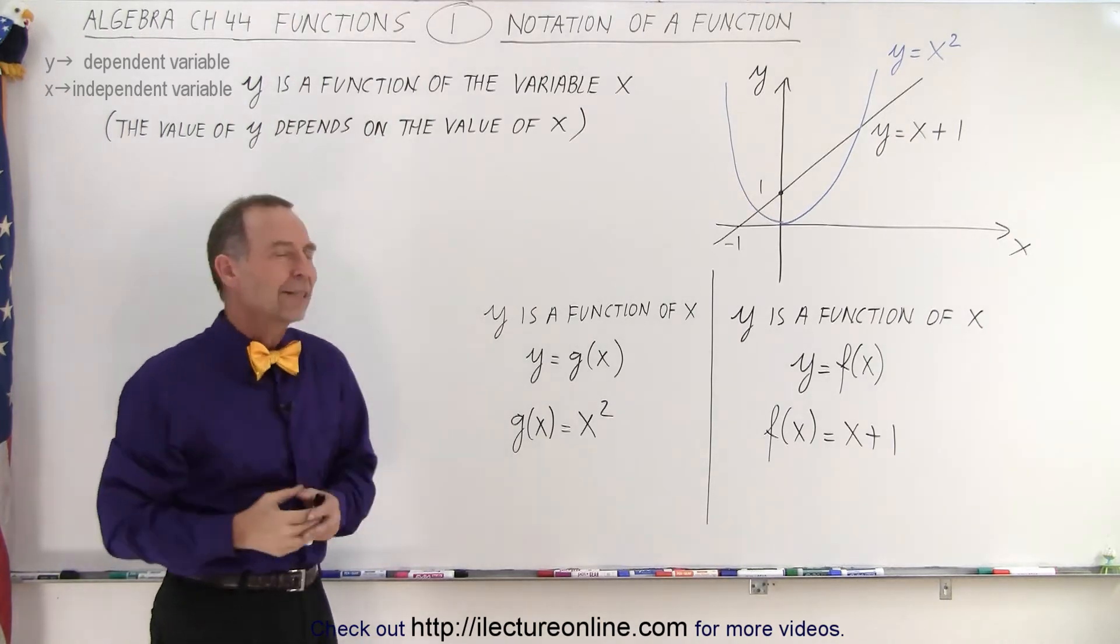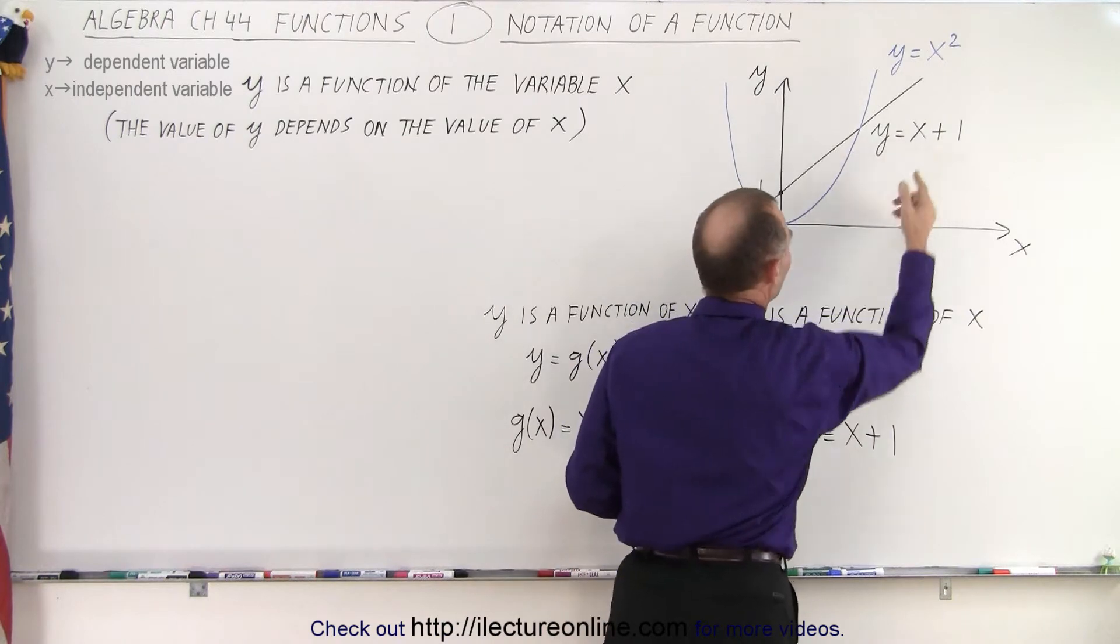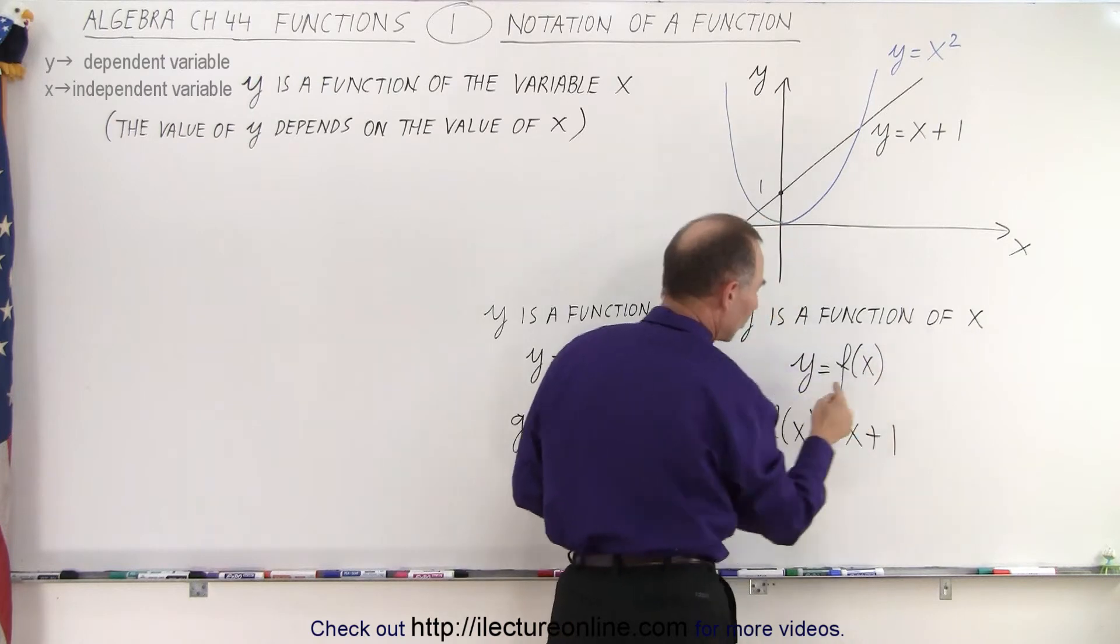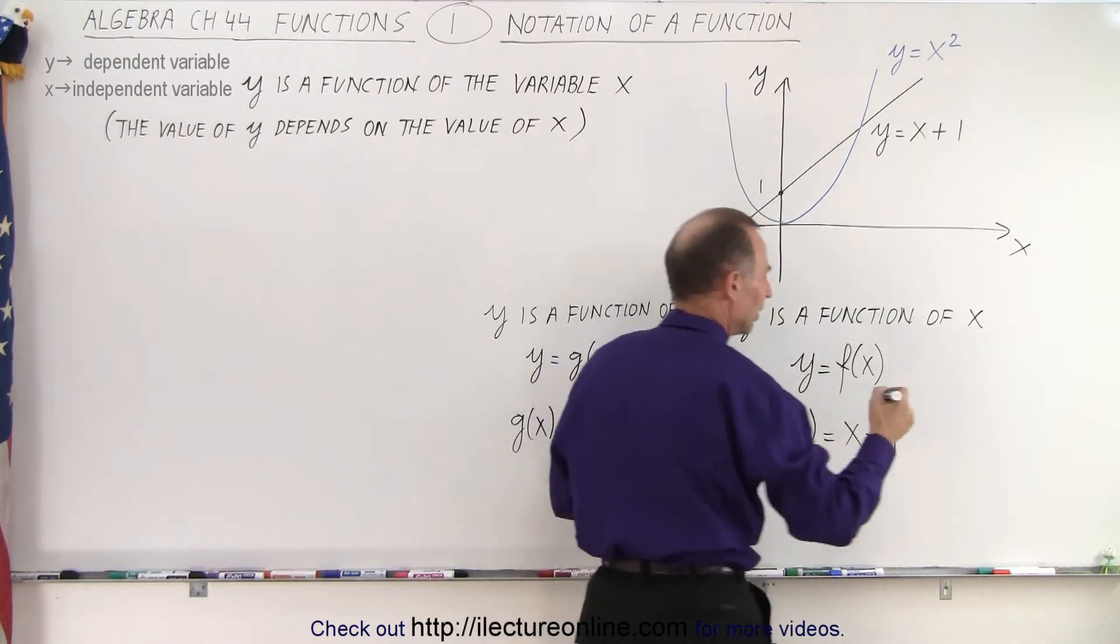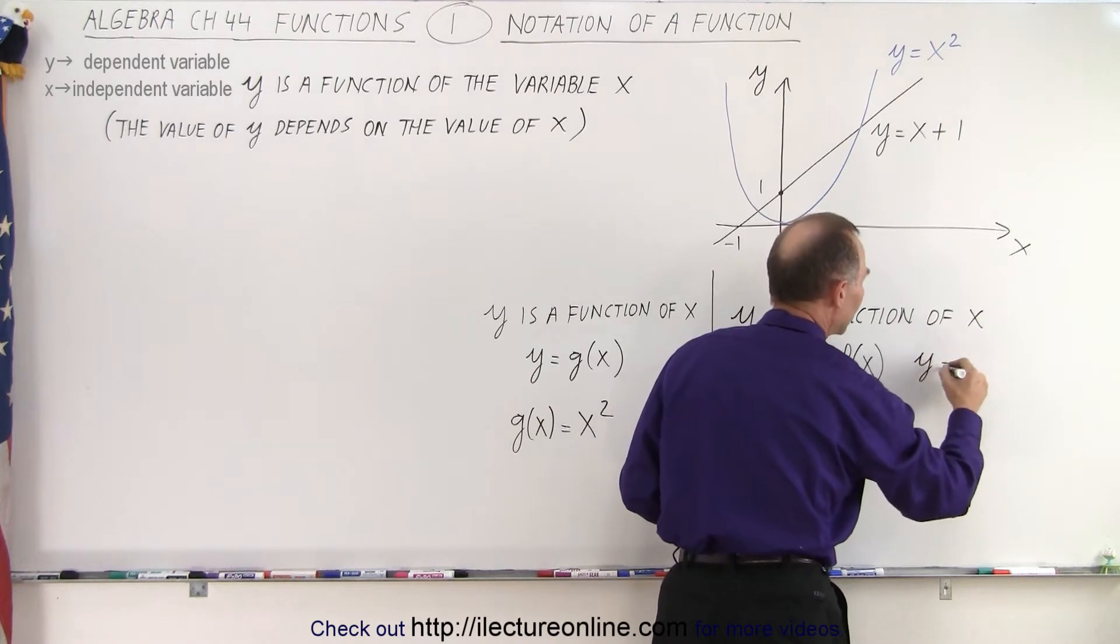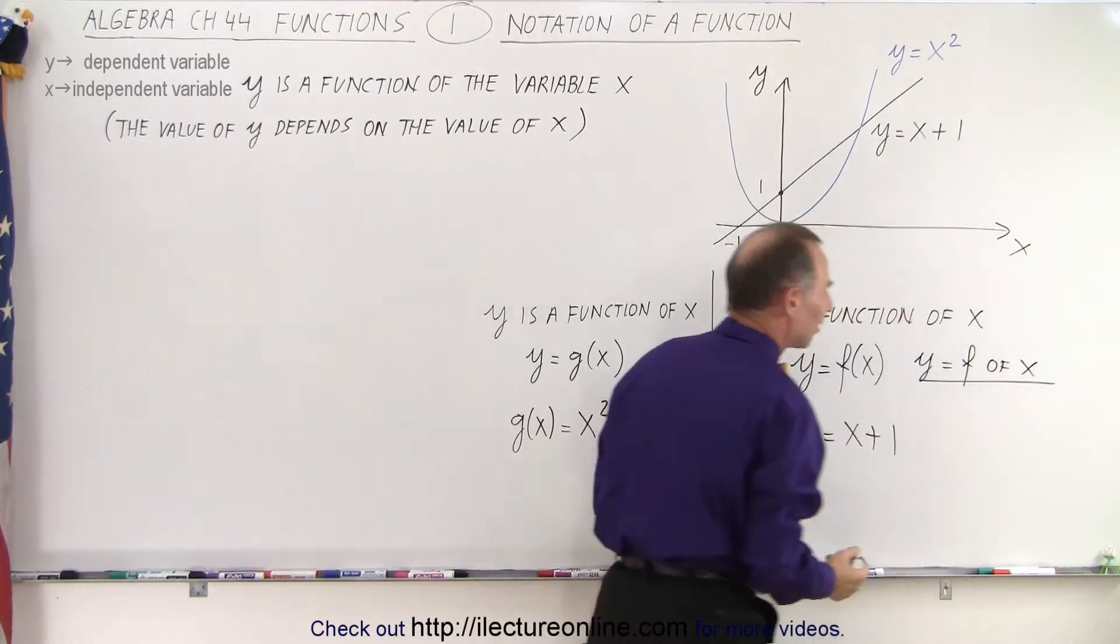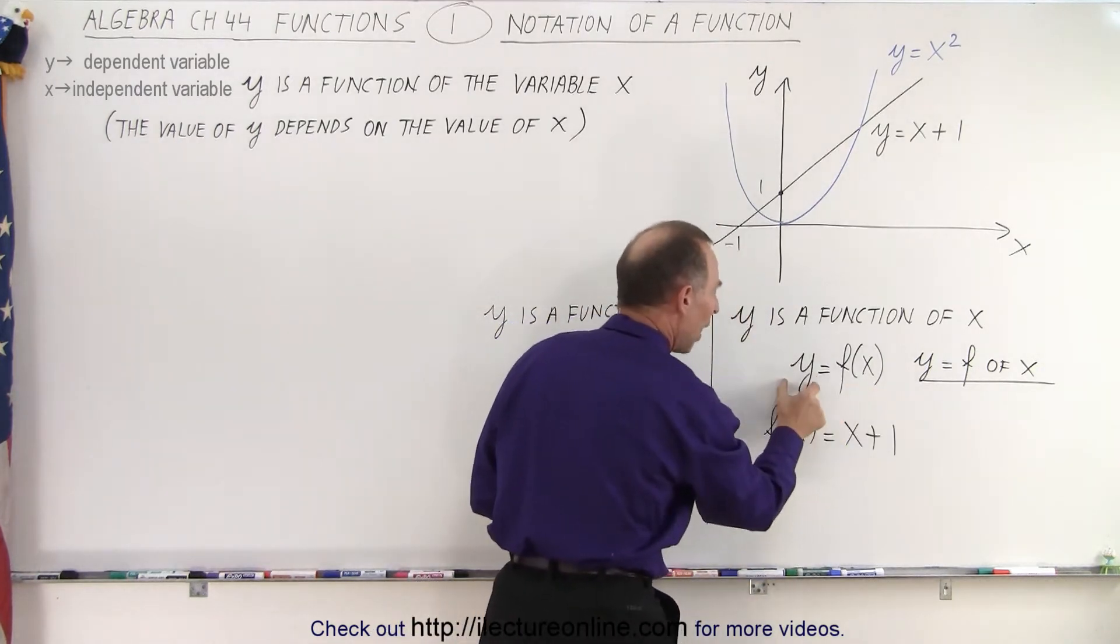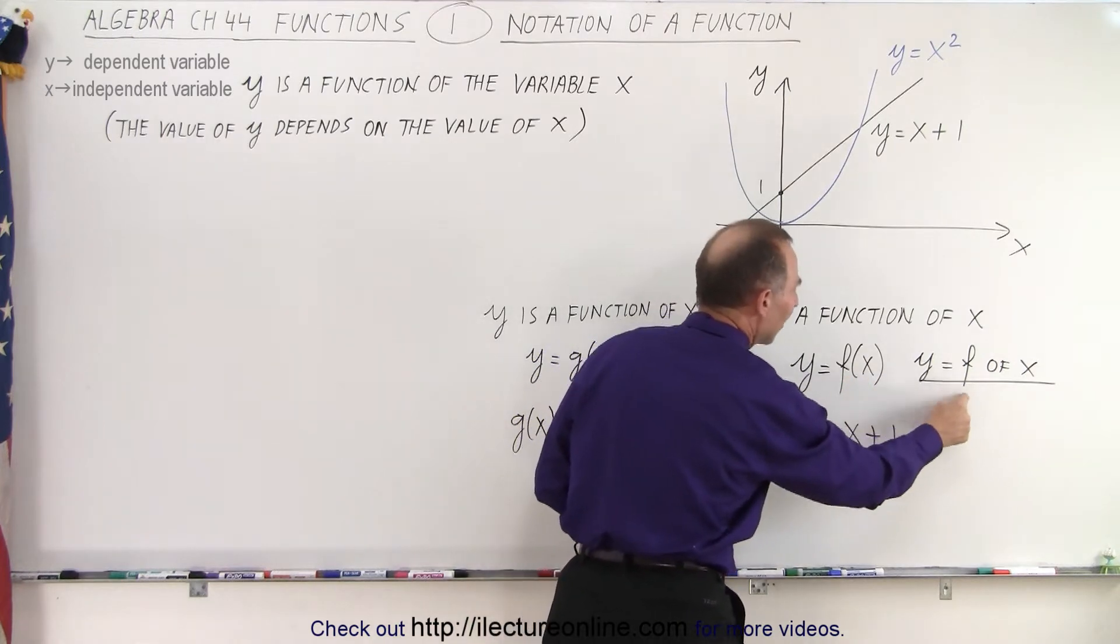So how do we write that mathematically? Well instead of writing y equals x plus 1, we can realize that since y is a function of the variable x, we can write y equals f of x. So the way this is written is y equals f of x. That's how it's pronounced, that's how it's said, that's how we claim this term to be. y is a function of x or y equals f of x.